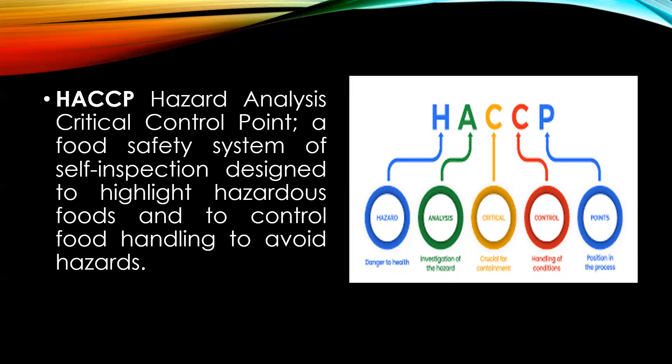The first step involves identifying a food that can lead to food poisoning or a foodborne illness. At the second step, you investigate the hazard and identify the problem. The third step involves understanding what steps need to be taken to overcome the issue. The fourth step is controlling so that the problem does not arise. The final step is implementing a standard operating procedure so that the problem does not recur.